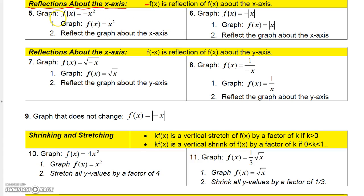So if someone said graph y equals minus x squared, well, you know how to graph x squared. Since minus x squared is just x squared multiplied by negative 1, to graph minus x squared you would just take this function and reflect it about the x-axis. Similarly, for y equals minus absolute value of x, the parent function is absolute value of x, and all we're doing is multiplying by negative 1, so we flip or reflect this graph about the x-axis.